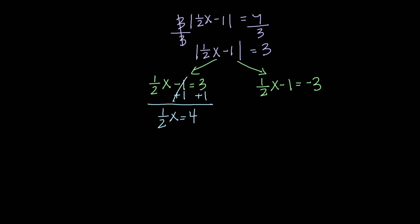And to undo multiply by 1 half, I'm going to multiply by 2. So, now I have x equals 8 as one of my solutions.